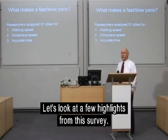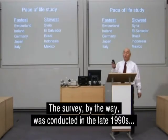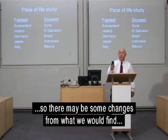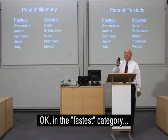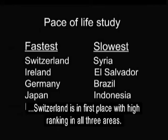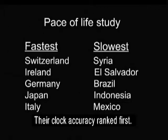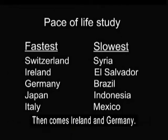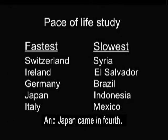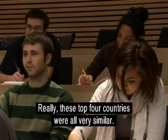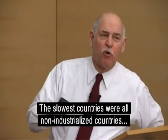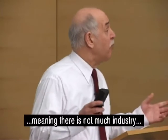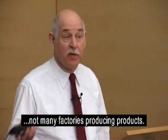Let's look at a few highlights from this survey, which was conducted in the late 1990s. In the fastest category, Switzerland is in first place with high ranking in all three areas — their clock accuracy ranked first. Then comes Ireland and Germany, and Japan came in fourth. These top four countries were all very similar. The slowest countries were all non-industrialized countries, meaning there is not much industry, not many factories producing products.